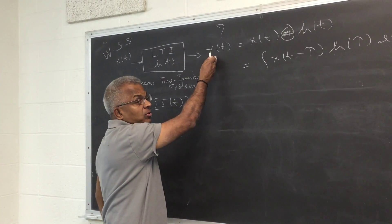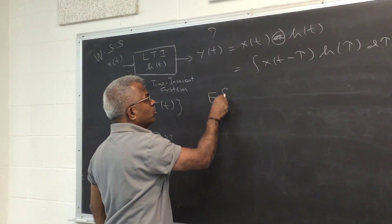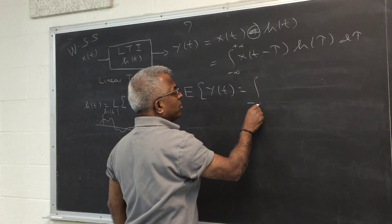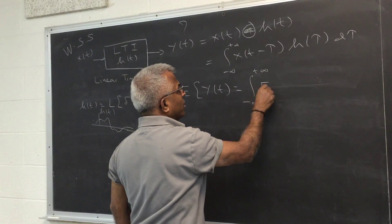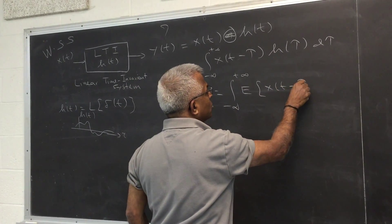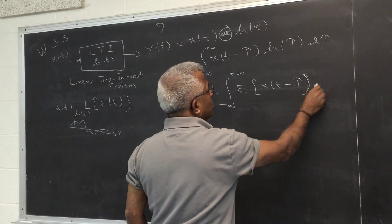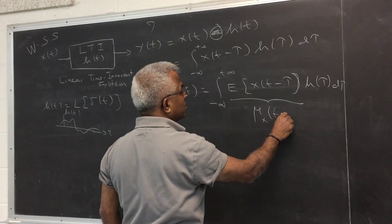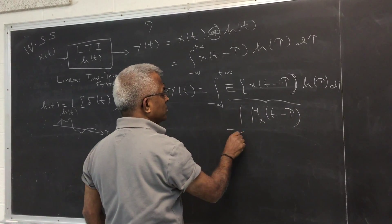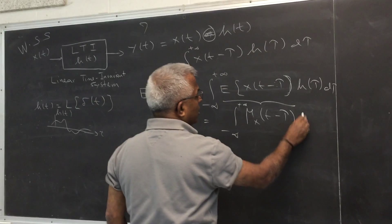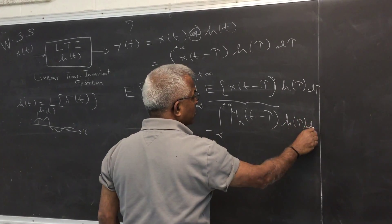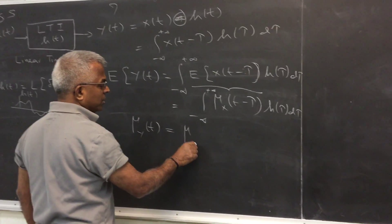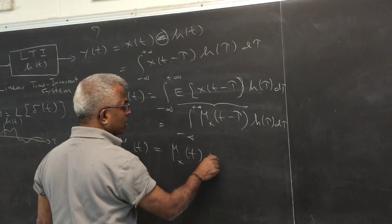First, let's look at the mean and autocorrelation properties of the output. The expected value of Y(t) is the expected value of the integral of X(t − τ) H(τ) dτ. This becomes the integral of μX(t − τ) H(τ) dτ from −∞ to +∞. So the output mean is the input mean convolved with H(t).